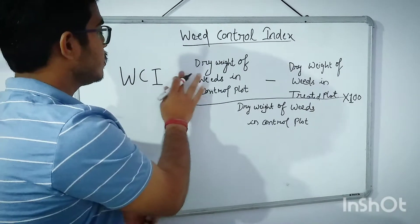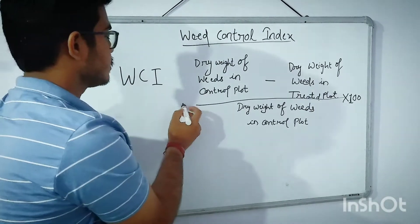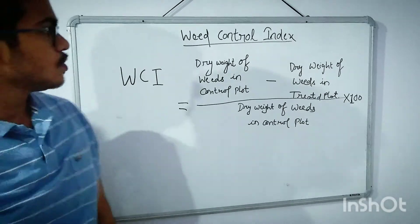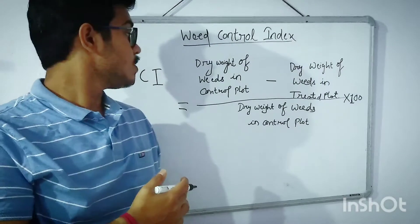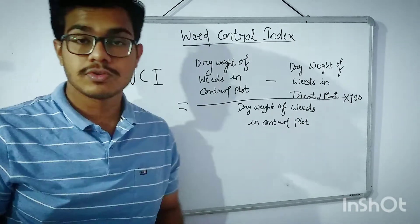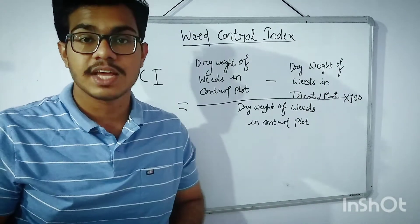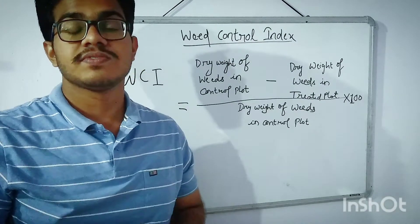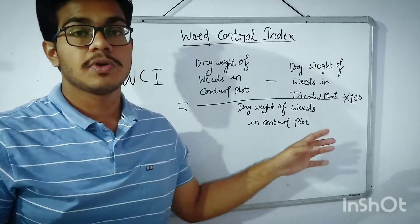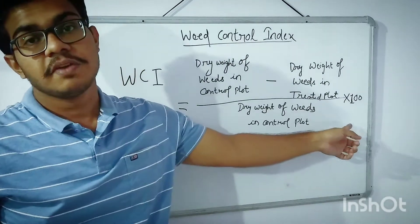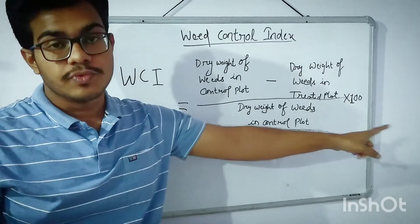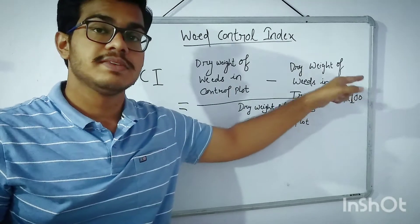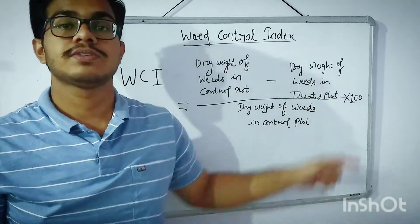So weed control index is equal to the dry weight of weeds in the control plot minus the dry weight of weeds in the treated plot, divided by the dry weight of weeds in the control plot, multiplied by 100.